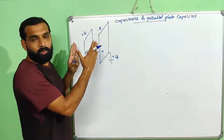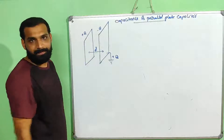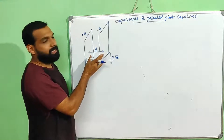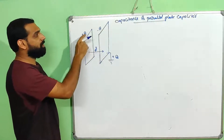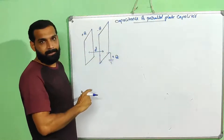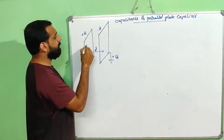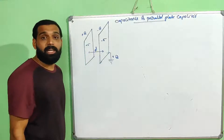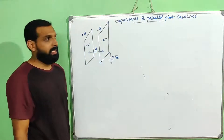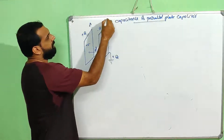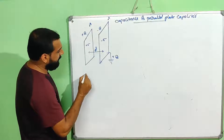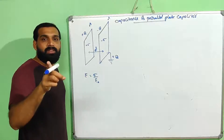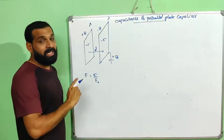Two infinite sheets separated by a distance d — that is the same arrangement. The surface charge density will be plus sigma and minus sigma. That is why we are talking about the electric field in the region. We are finding the electric field as sigma by epsilon 0.